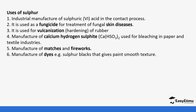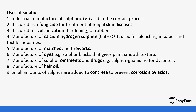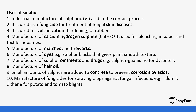Sulfur gives paint a smooth texture and is used in the manufacture of ointments and drugs, including those for curing fungal diseases. It is used in the manufacture of hair oil, especially for treatment of scalp conditions — sulfur is added in most such products and shampoos. A small amount of sulfur is added to concrete to prevent corrosion by acids. It is also used in the manufacture of fungicides for spraying crops against fungal infections.